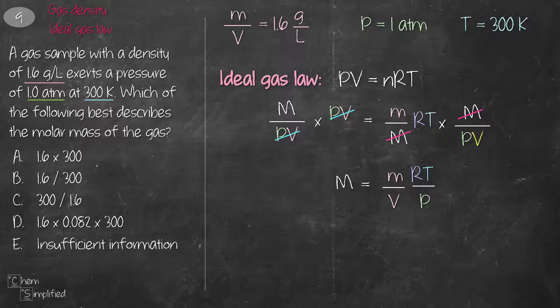We plug in the information that we have, which is 1.6 for m over V, and then R is 0.082. That's the gas constant. Temperature is 300 and then pressure is 1 atm. That means option D is the correct answer.